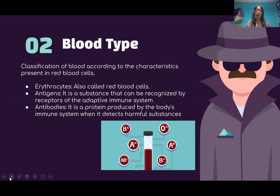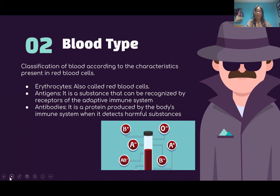Then we have blood type. Blood type is something we are all related to because it's in our veins, so this may look less scary — and it's really not scary. You have three characteristics that are present in red blood cells. You have the erythrocytes, which are also called red blood cells and are the cells that give the blood its characteristic red tone. You have the antigens, which are substances that recognize the receptors of the adaptive immune system, meaning they tell your body not to attack itself. Then you have the antibodies, which are proteins produced by the body's immune system that attack harmful substances — it's the thing that attacks viruses, for example.